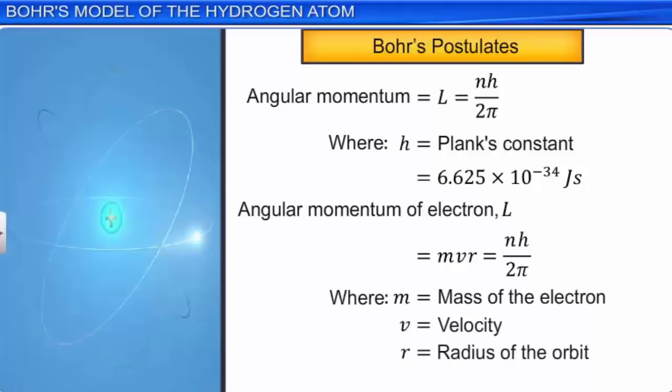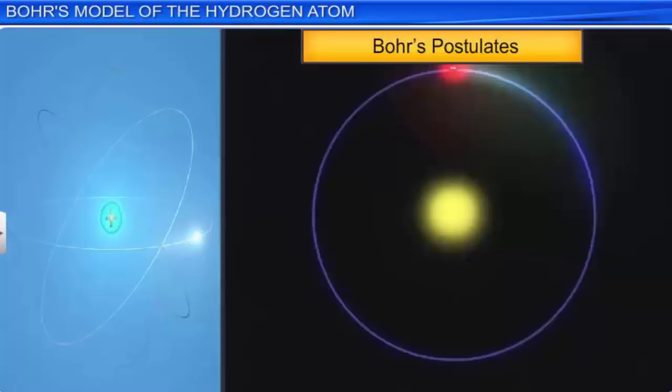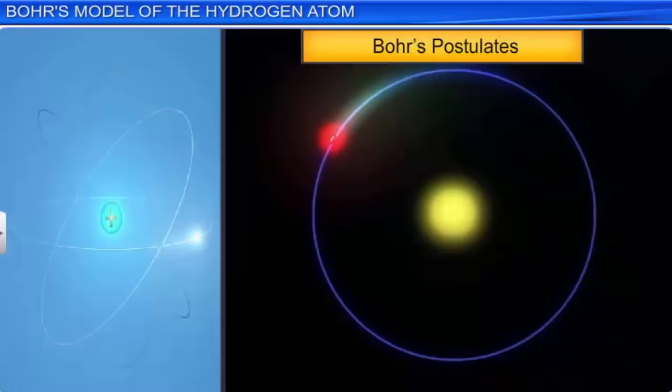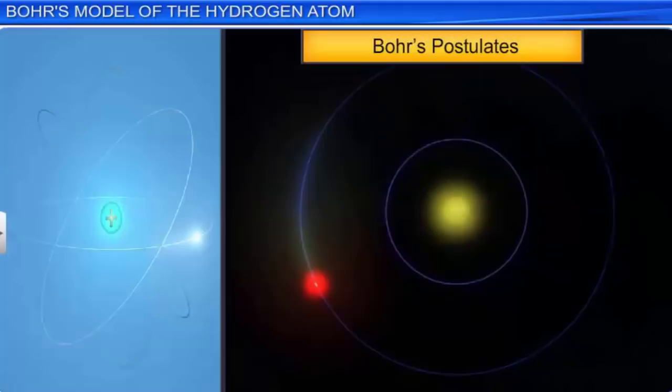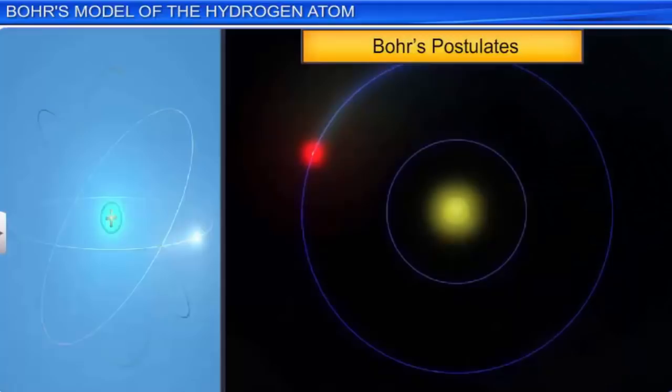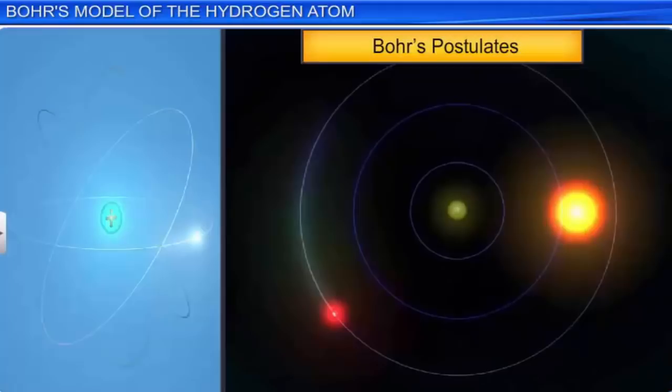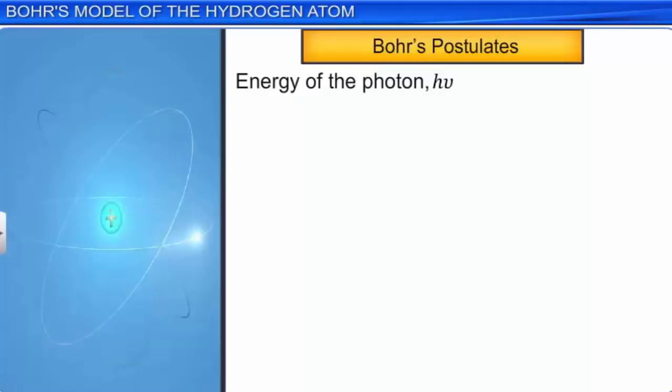According to Bohr's third postulate, an electron might make a transition from one specific non-radiating orbit to another of lower energy. When it does so, a photon is emitted having energy equal to the energy difference between the initial and final states. The frequency ν of the emitted photon is given by the relation hν = Ei − Ef, where Ei is the initial state energy and Ef is the final state energy of the electron — equation 2.